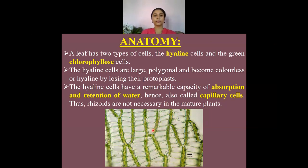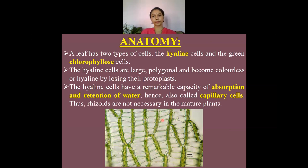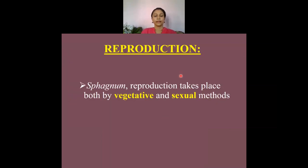Another characteristic feature in the leaf cross section of Sphagnum is the arrangement of the chlorophyllous cells and hyaline cells. They are present in such a manner that they form a regular reticulate pattern, and this is the identifying character of the genus Sphagnum.